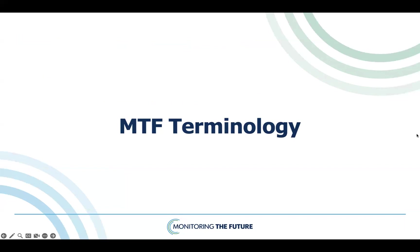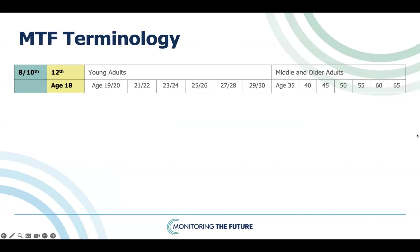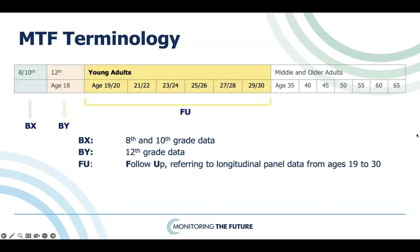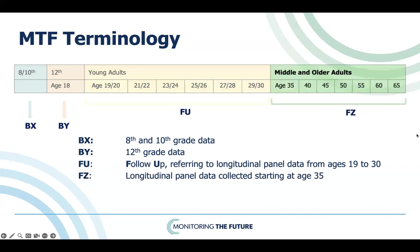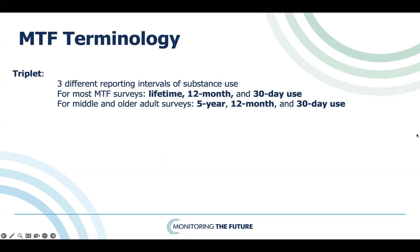Understanding MTF-specific terminology will be helpful for using MTF data in your research. The MTF main study includes 8th, 10th, and 12th grade surveys. 8th and 10th grade data is called BX; 12th grade data is called BY. The follow-up surveys for young adults are called FU, which includes data from age 19 to 30. Surveys for middle and older adults are called FZ, which is data collected starting at age 35 and continuing every five years, with the latest data including age 65 in 2023. Triplet indicates three different reporting intervals of substance use in MTF. For most surveys, triplet refers to substance use over a lifetime, in the past 12 months, and past 30 days. For middle and older adult surveys, triplet indicates use in the past 5 years, 12 months, and past 30 days.